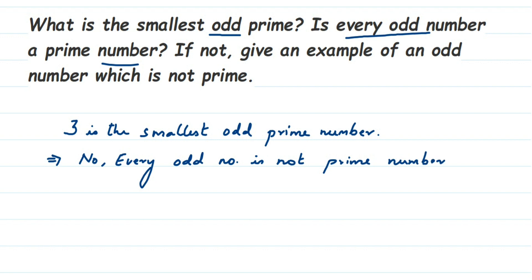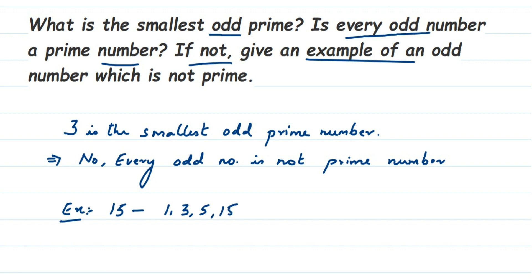We can say that except two — which is an even prime number — every other prime number is odd. But not every odd number has to be prime. For example, fifteen is also an odd number and also a composite number. Fifteen has factors one, three, five, and fifteen. So fifteen is an odd number but not a prime number.